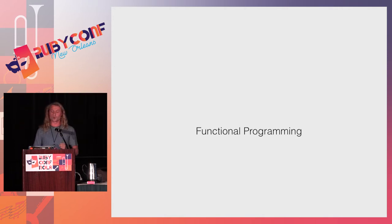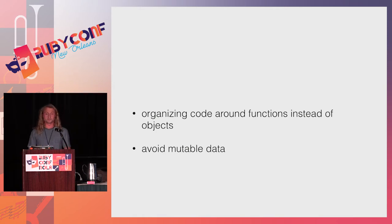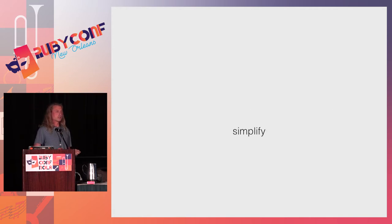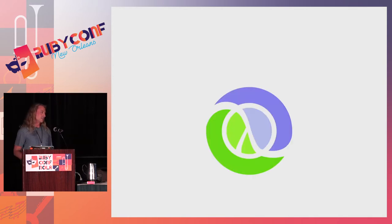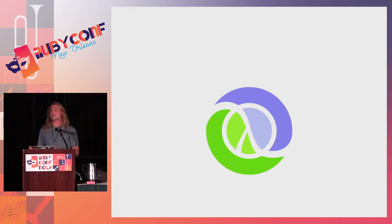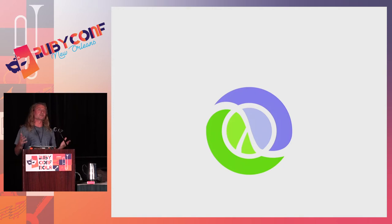This takes us to the idea of functional programming. At its core, functional programming is about two ideas: organizing code around functions instead of objects, and — arguably more importantly — having immutable data. You might not even know what those two things mean, but that's okay, because there's a much bigger idea at play with functional programming, and it's to simplify. It's the same thing we've seen since the 1950s — building technologies to simplify how we build our programs, because we know programming is really tough.